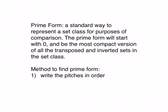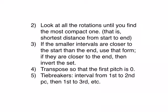Here's a method to find the prime form. First we write all the pitches in order. Then we look at all the rotations until you find the most compact one, that is to say, the shortest distance from start to end. This is the same thing that we did when we found the normal order. If the smaller intervals are closer to the start than the end, then we'll use that form. If they're closer to the end than the start, we'll invert the set and use that one.